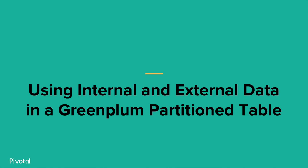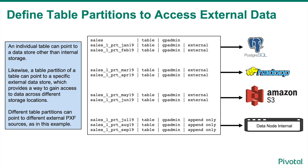In this last section, we will review using internal and external data in a Greenplum partitioned table. Table partitioning enables supporting very large tables, such as fact tables, by logically dividing them into smaller, more manageable pieces. Partitioned tables can improve query performance by allowing the Greenplum database query optimizer to scan only the data needed to satisfy a given query, instead of scanning all the contents of a large table. External table partitions are read only.